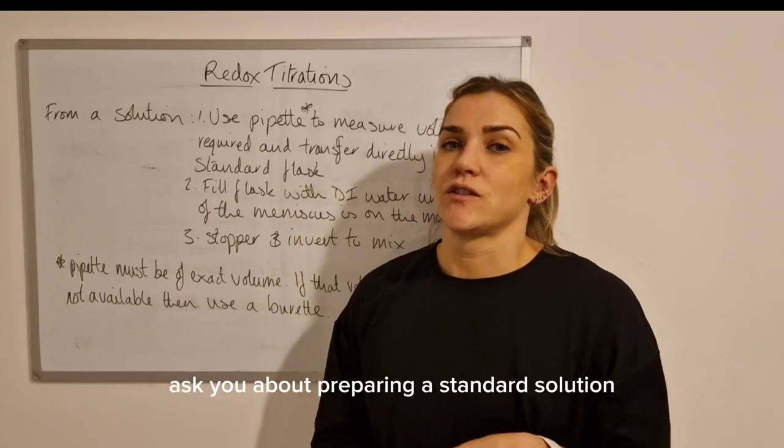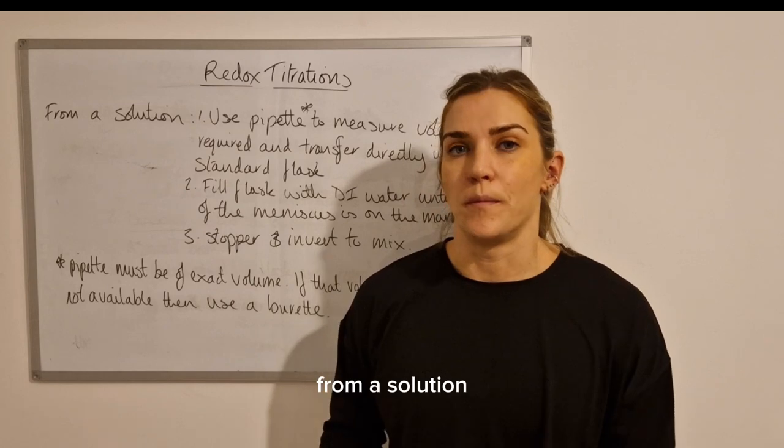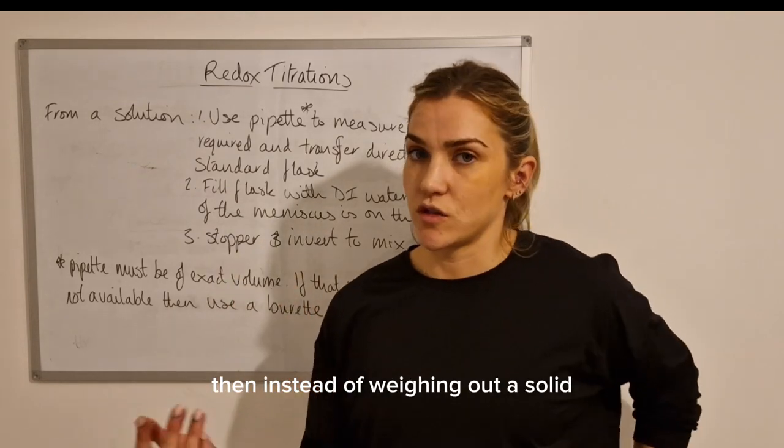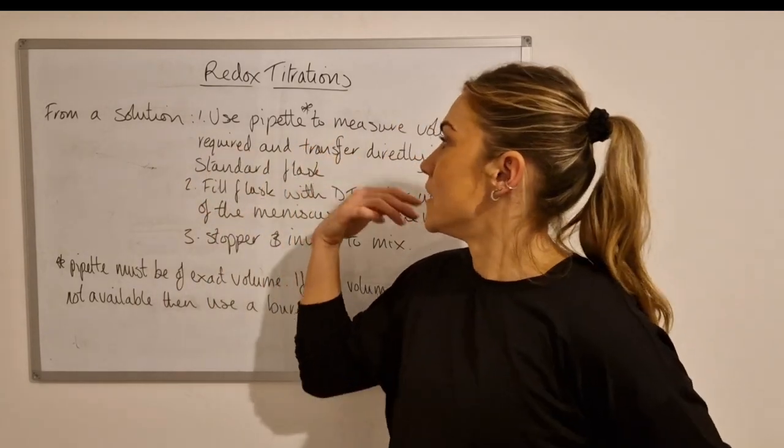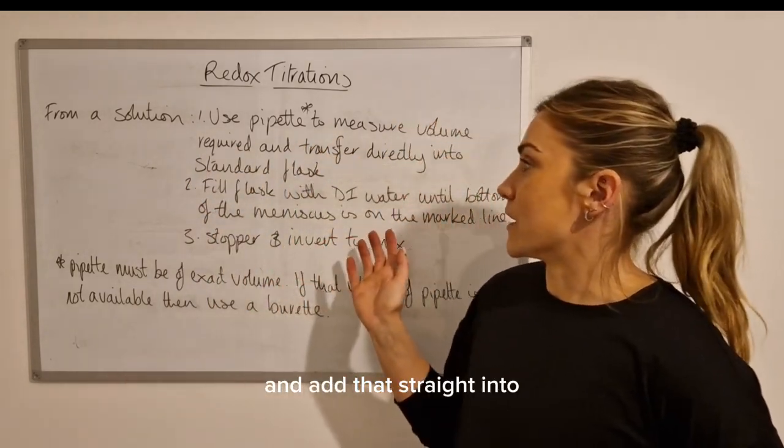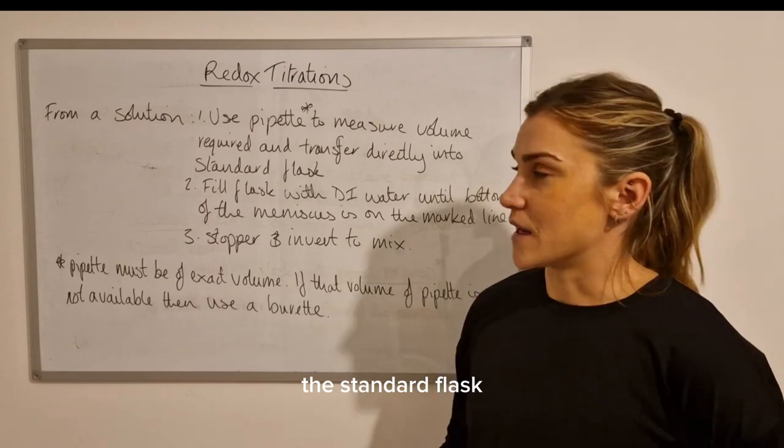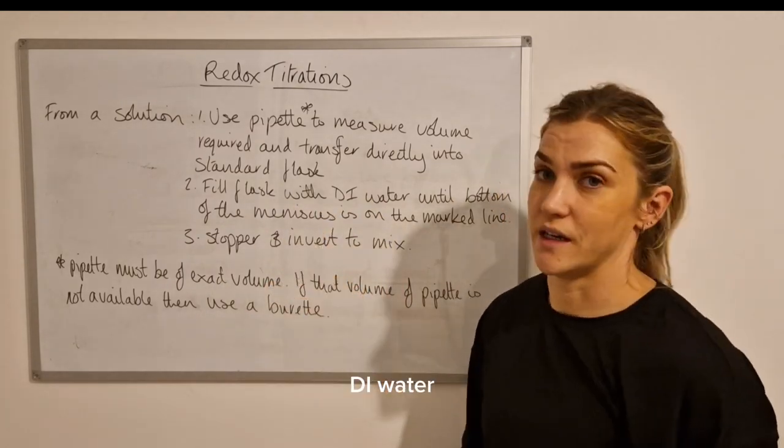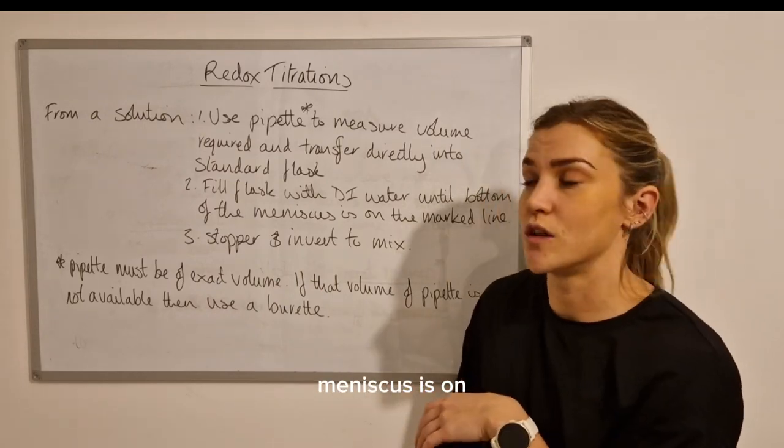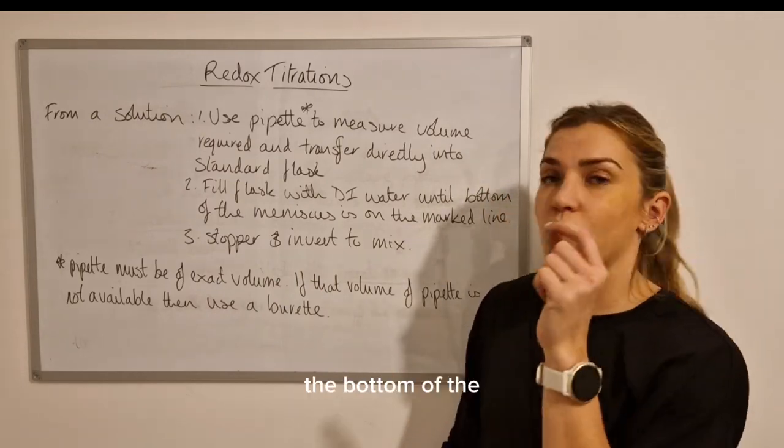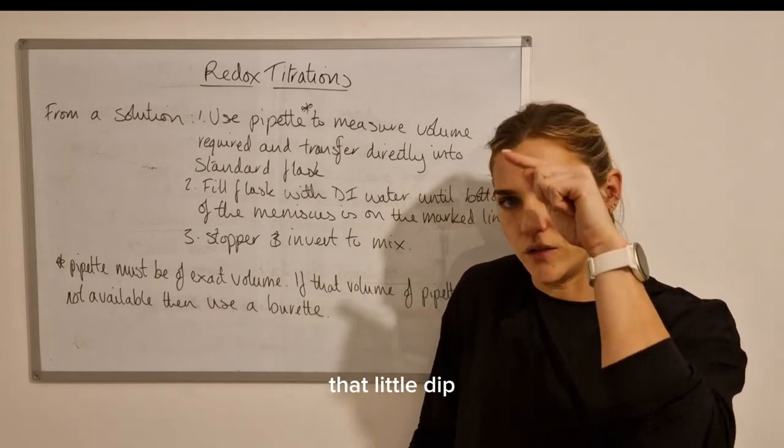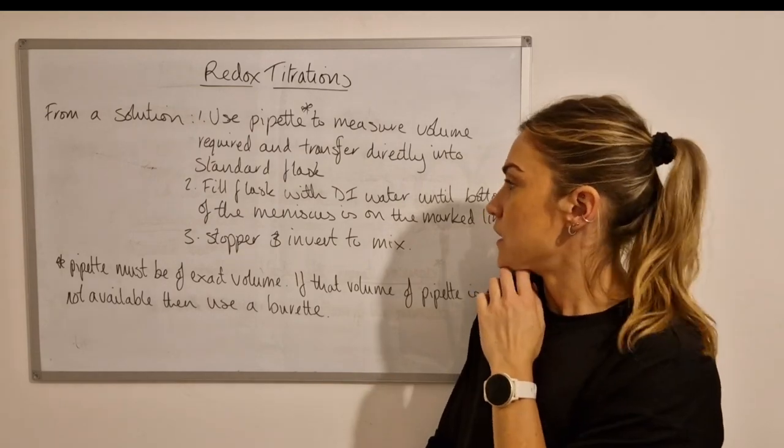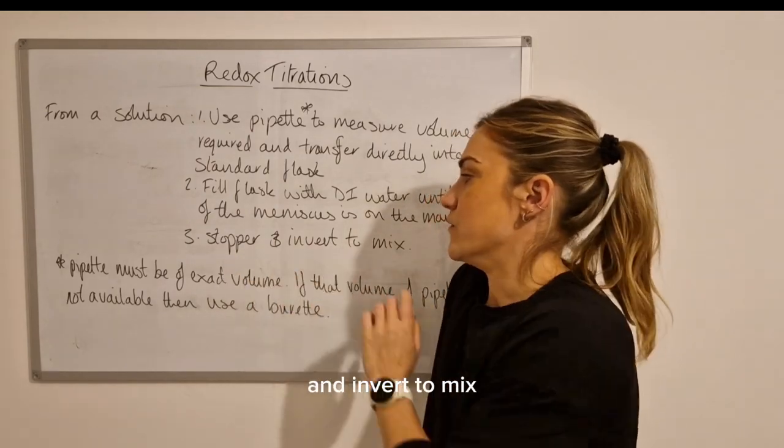Sometimes they will ask you about preparing a standard solution from a solution or a liquid. If that's the case, then instead of weighing out the solid, you just use a pipette to measure the volume required and add that straight into the standard flask. And then after that, it's just the same process of filling the flask with deionized water until the bottom of the meniscus is on the marked line. The bottom of the meniscus, remember, is the bottom of that little dip that you get in a liquid within the tube, and then stopper and invert to mix.